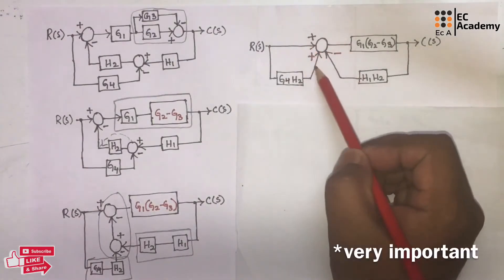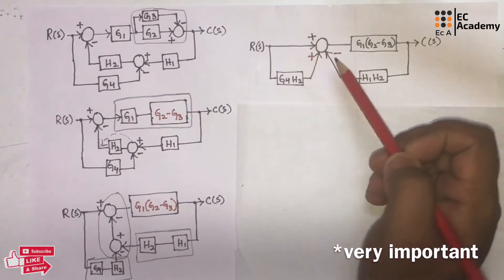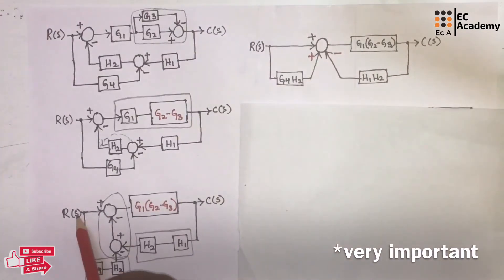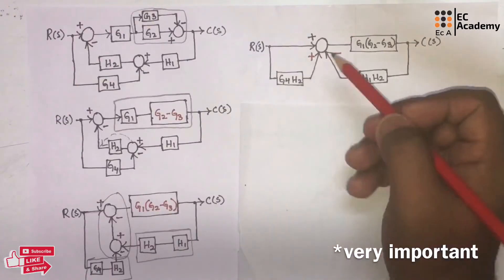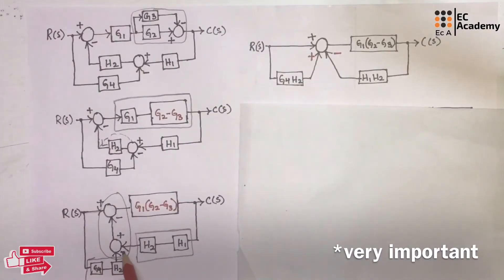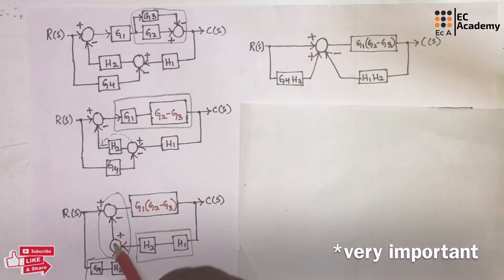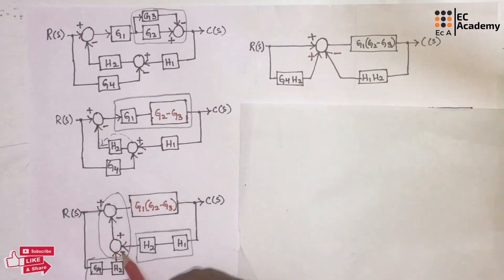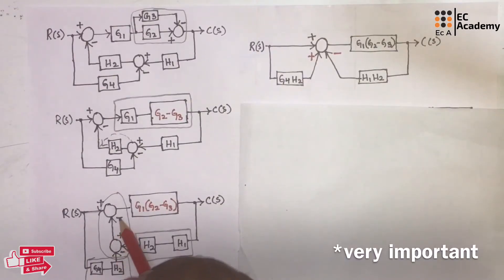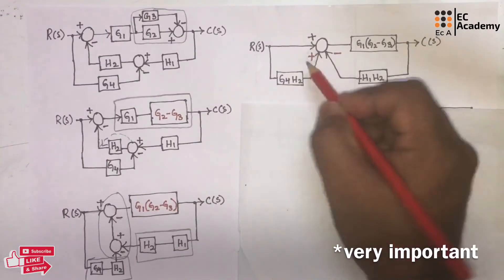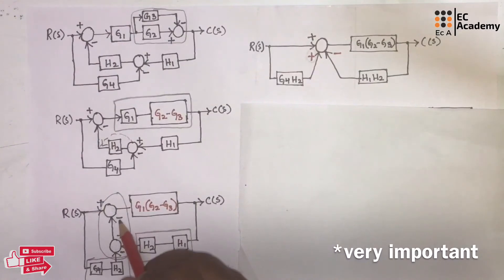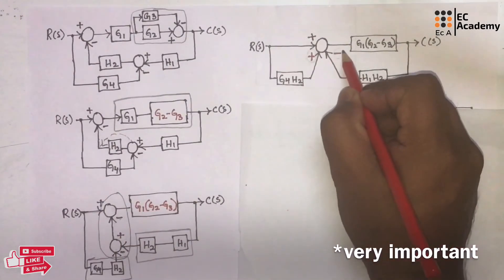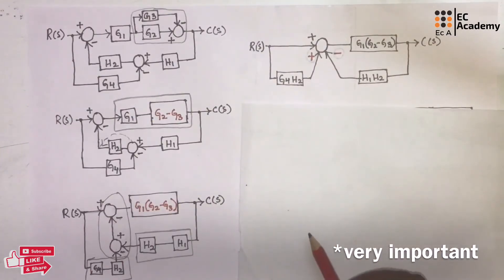Now we have written different polarities here, and this is very important — how to write these polarities. The plus sign is written as it is because we had a plus sign there. For the feedback loop where we had a negative sign, we need to multiply signs as we move along the signal path. So a minus sign multiplied with another minus sign becomes a plus sign. And in another path, a plus sign multiplied with a minus sign gives us a negative sign. This is very important while combining summing points.